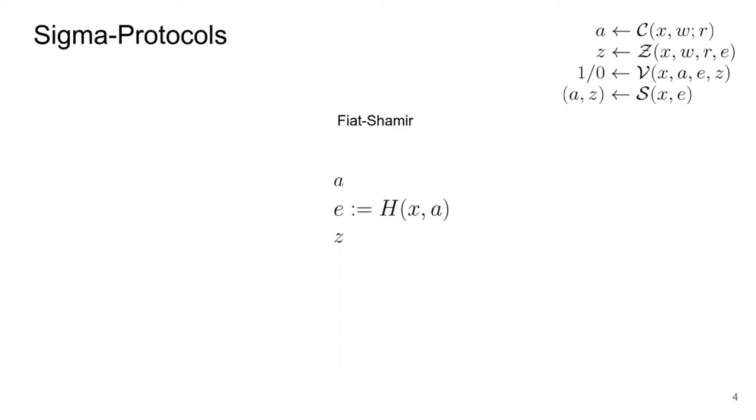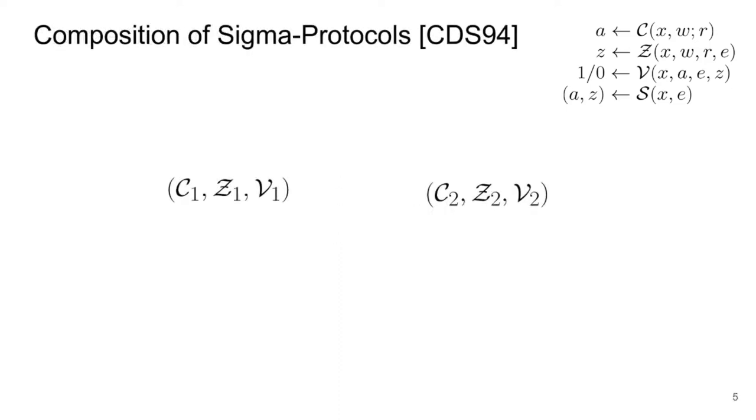It is a natural question to ask whether it is possible to compose several sigma protocols together. The CDS94 composition technique provides very good tools to do so by manipulating the challenge string. Suppose that we are given two sigma protocols, the first one with respect to a certain relation R1, and the second one with respect to R2. We can form a new sigma protocol for the predicate that joins in conjunction R1 and R2 by running both sigma protocols in parallel with the same challenge.